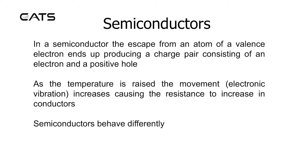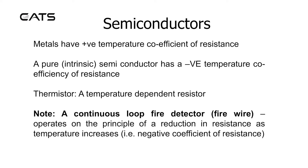As the temperature is raised, the movement increases, causing the resistance to increase in conductors. Semiconductors behave differently. Metals have a positive temperature coefficient of resistance, meaning as they get hot, they conduct less. A pure intrinsic semiconductor has a negative temperature coefficient of resistance, meaning as it gets hot, it conducts more.